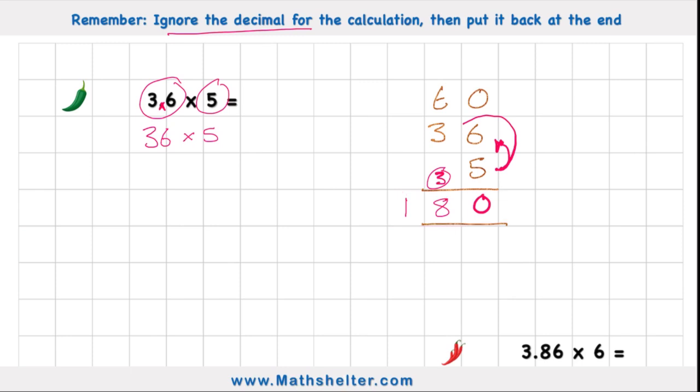But remember, that wasn't my question. My question was 3.6 times 5. So what I have to now look at is how many numbers after the decimal did I just ignore? Well, I can see my decimal place just here and how many numbers afterwards I have just 1.